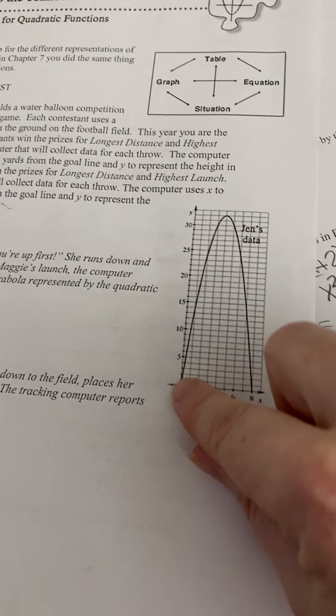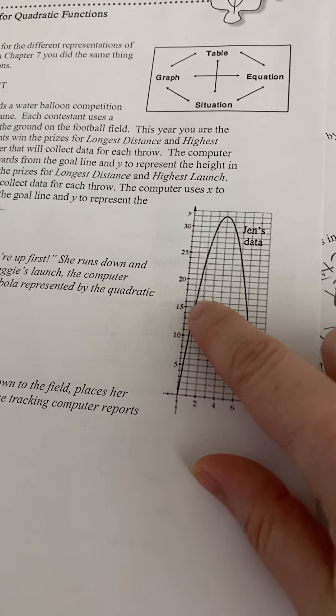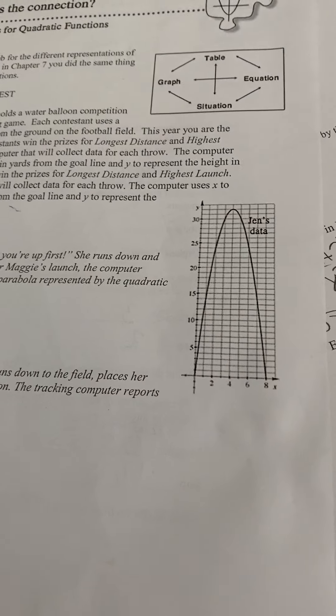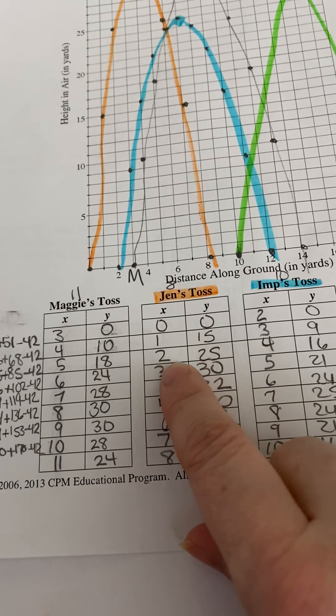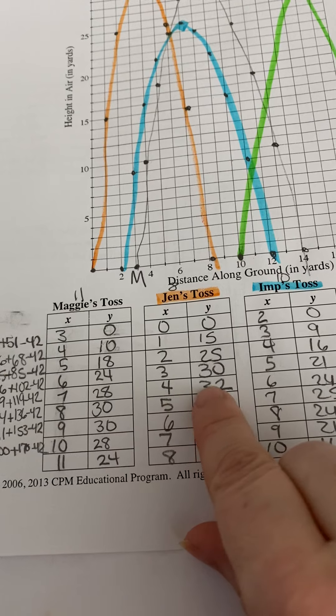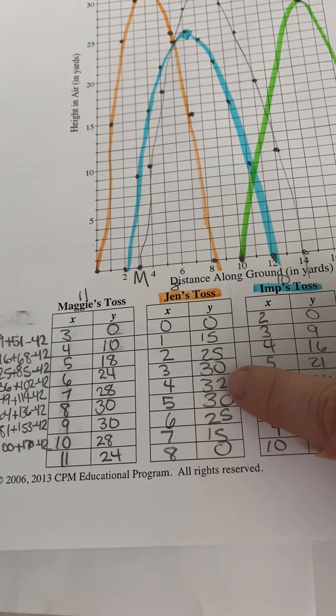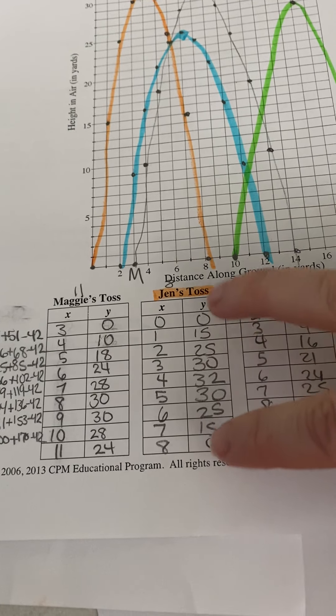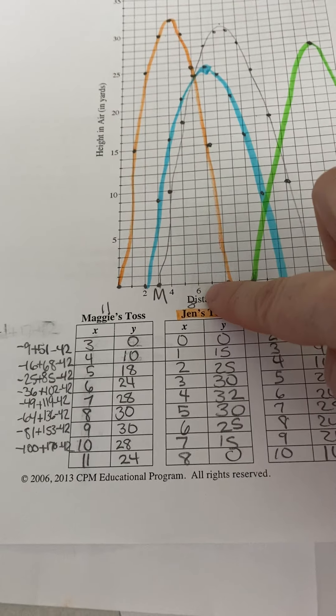Jen's toss, they gave you the graph, and so you need to just go through here and you will find the ordered pairs. So, like 1 is at 15, 2 is at 25. And so, 1 was 15, 2 was 25, 3 was 30, 4 was the vertex. It was the highest point at 32. So, that means, as you continue, again, you're going to see that those are 30, 25, 15, and 0. So, I highlighted Jen in orange.